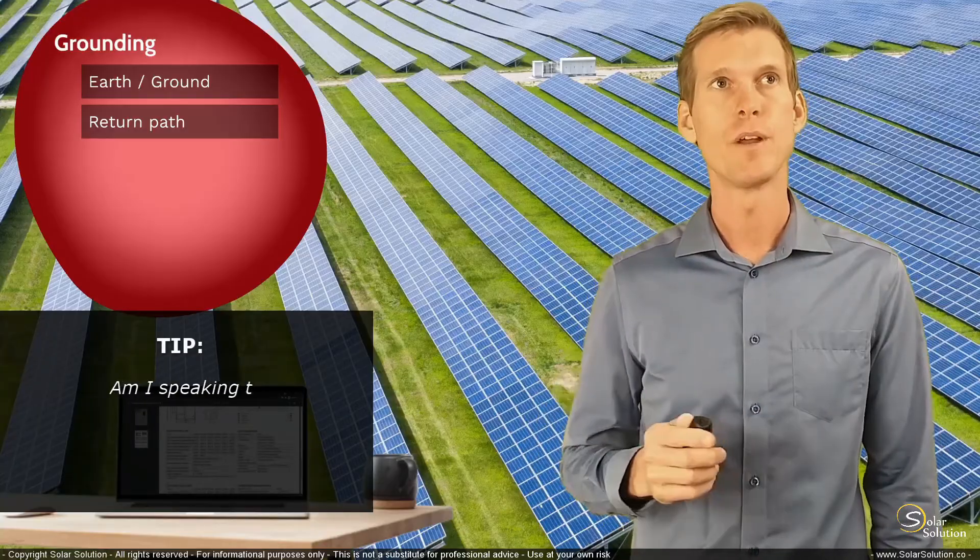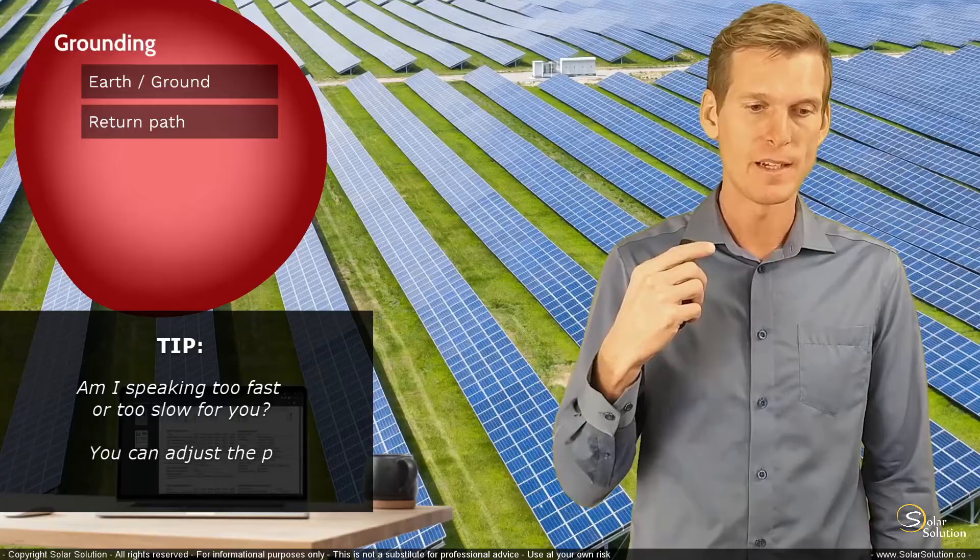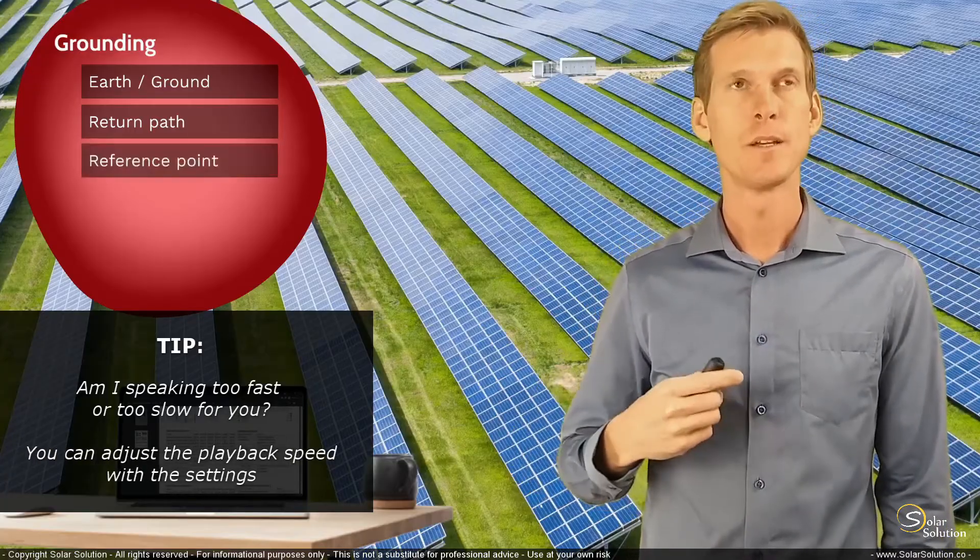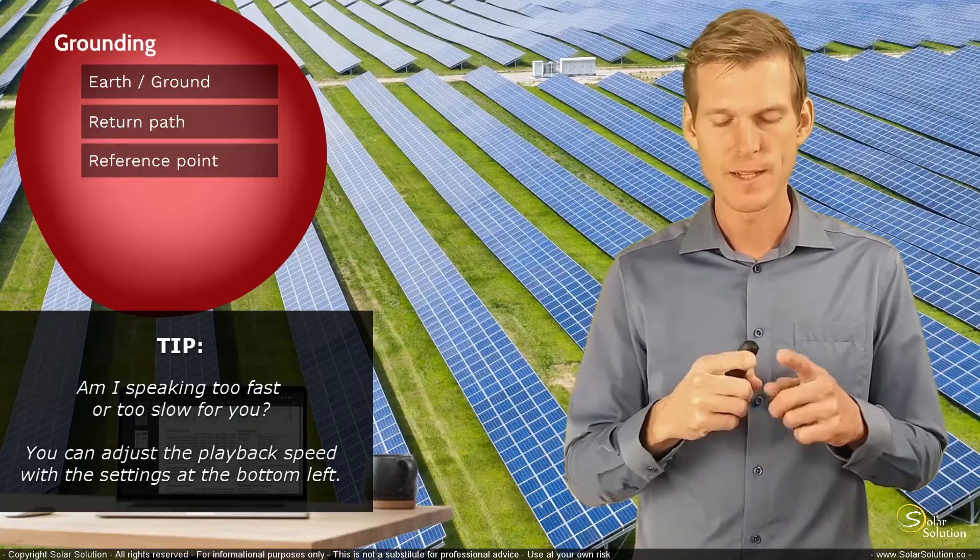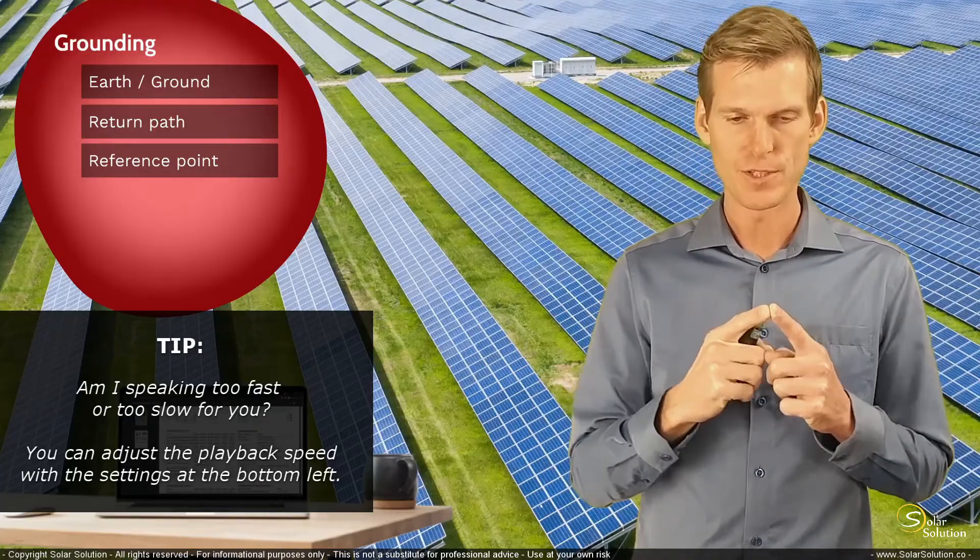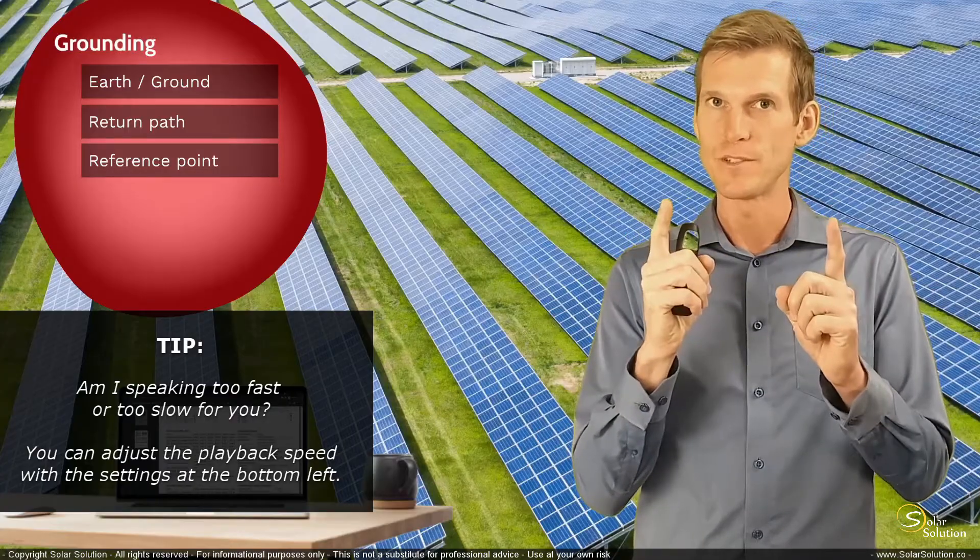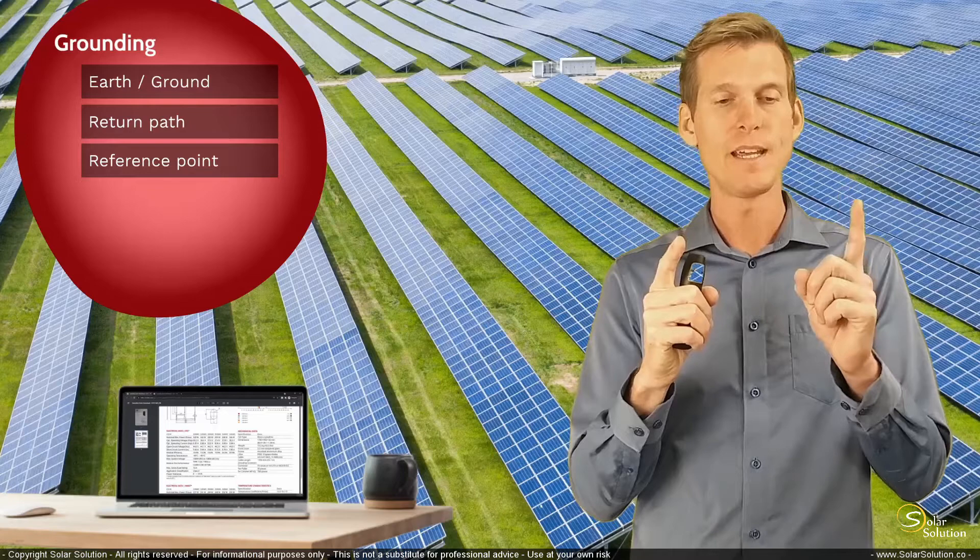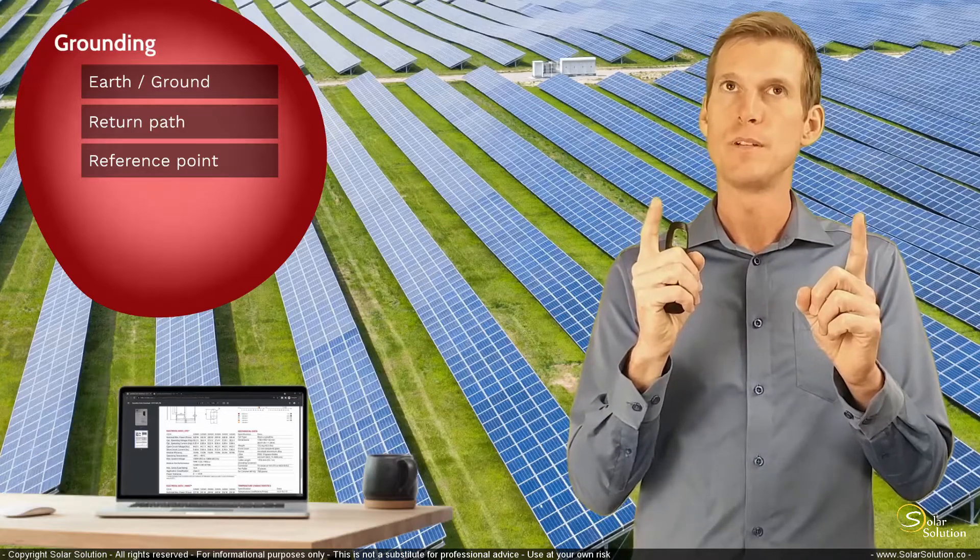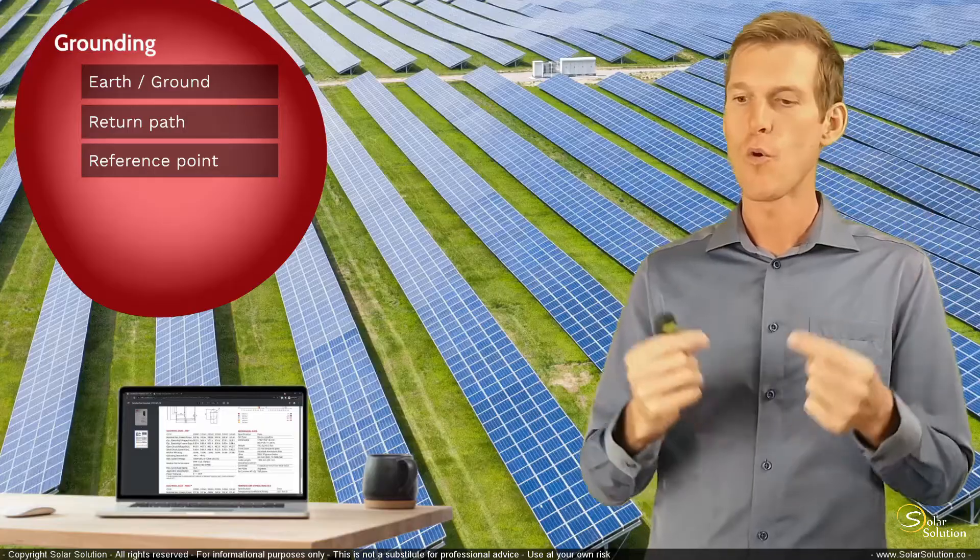The second function that an earth or grounding system may have in your setup is that of providing an electrical reference point. Because we often talked about electrical pressure, the voltage. The electrical pressure, the voltage, refers to the potential difference between two points. The voltage describes the voltage difference between point A and B, but now we don't know the absolute voltage, the absolute pressure of A or B.